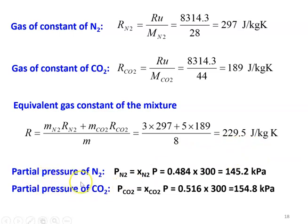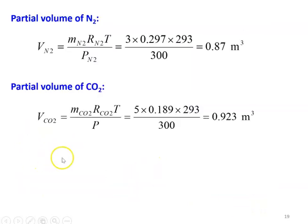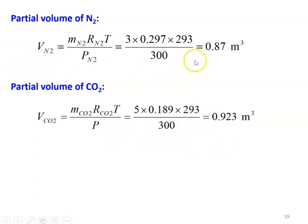Partial pressure of N2: PN2 equals XN2 into P — 0.484 into 300 equals 145.2 kilopascal. Partial pressure of CO2: PCO2 equals XCO2 into total pressure — 0.516 into 300 equals 154.8 kilopascal. Partial volume of nitrogen: VN2 equals mass of N2 × RN2 × T divided by PN2 — 3 into 0.297 into 293 divided by 300 equals 0.87 cubic meter. Partial volume of CO2: VCO2 equals 5 into 0.189 into 293 divided by 300 equals 0.923 cubic meter.